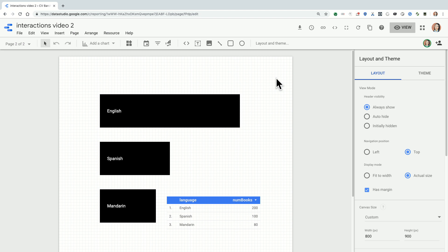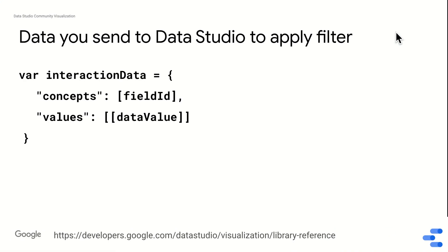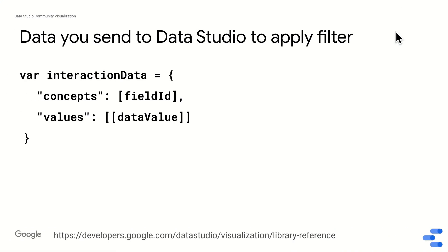So in order to keep track of that, Data Studio actually passes you the value that's currently being used as an interaction. But first, let's remind ourselves what the data you send to Data Studio in order to apply a filter looks like. You have this interaction data object, you have concepts, you have this field ID, which is the dimension ID that you want to filter on, and values, which are the dimension values that you care about.